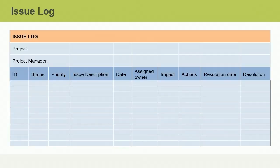An issue log is used to document and track project issues. Throughout the project life cycle, you'll need to document potential areas of concern, uncertainties, conflicts, or misalignments that require further action and control. These issues should be entered into the project's issue log. An issue log is a table that has space to record an identifier and description of the issue and its status, priority, owner, possible impact, and action plan. Once resolved, the entry is completed by filling in the date and manner in which the issue was resolved.